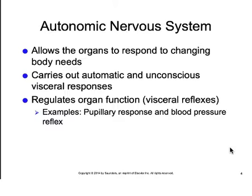The autonomic nervous system is designed to control homeostasis, and it works on an unconscious level so that we don't have to spend all our waking hours controlling our internal function. Examples include control of blood pressure, control of heart rate, control of glandular secretions, control of the movement of food through the digestive system, and control of the routing of air in the lungs.